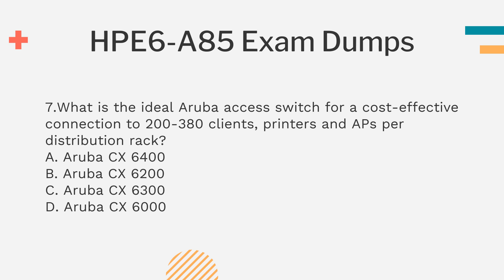Question 7. What is the ideal Aruba access switch for a cost-effective connection to 200-380 clients, printers, and APs per distribution rack? A. Aruba CX 6400 B. Aruba CX 6200 C. Aruba CX 6300 D. Aruba CX 6000